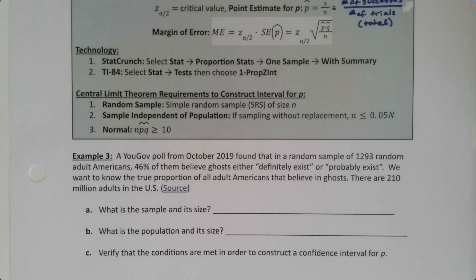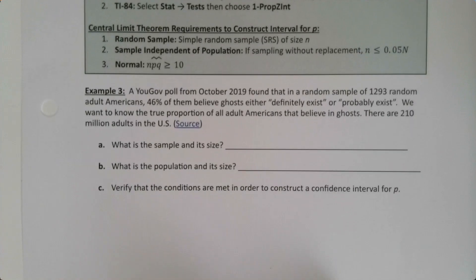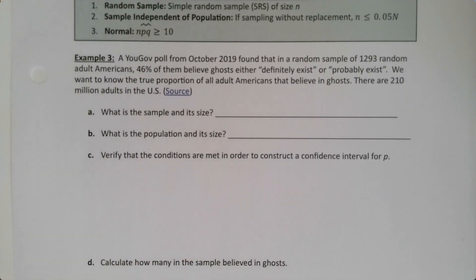Example three: A YouGov poll from October 2019 found that in a random sample of 1293 adult Americans, 46 percent believe ghosts either definitely exist or probably exist. We want to know the true proportion of all adult Americans that believe in ghosts. There are 210 million adults in the US.